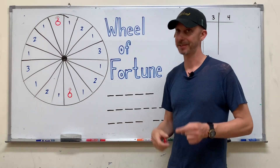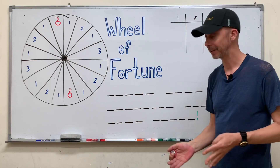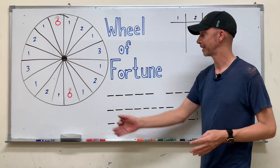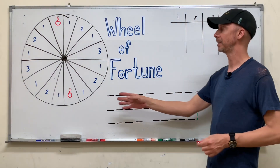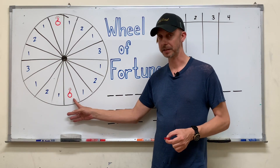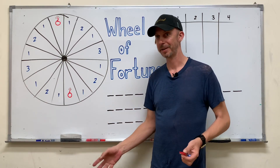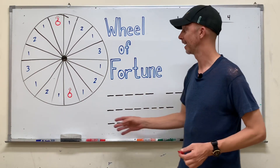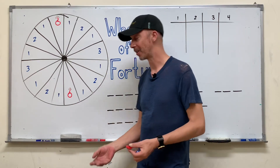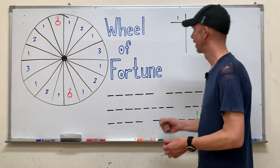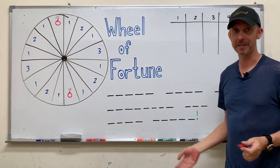Bombs work the same way as the bankrupt tile in the real game of Wheel of Fortune, but it's easier for students to understand. Bankrupt means you lose all your money, but I don't want to teach this word. A bomb — they already know how this works. If you land on the bomb, boom, all of your points disappear.